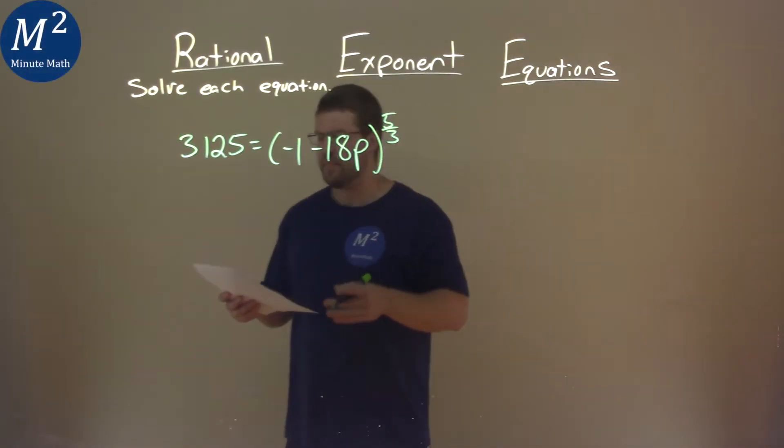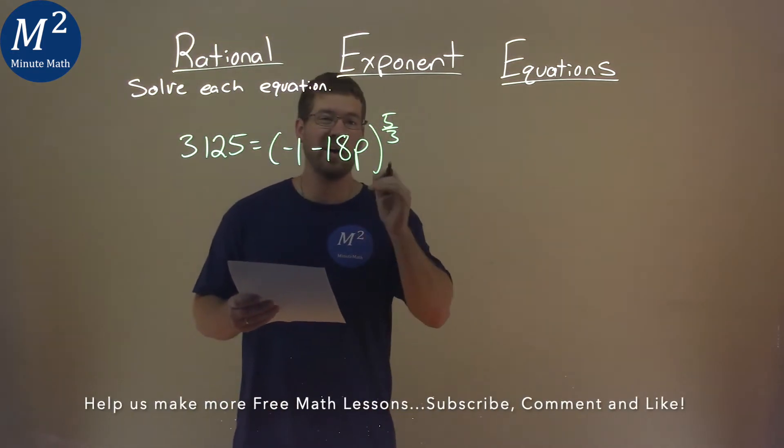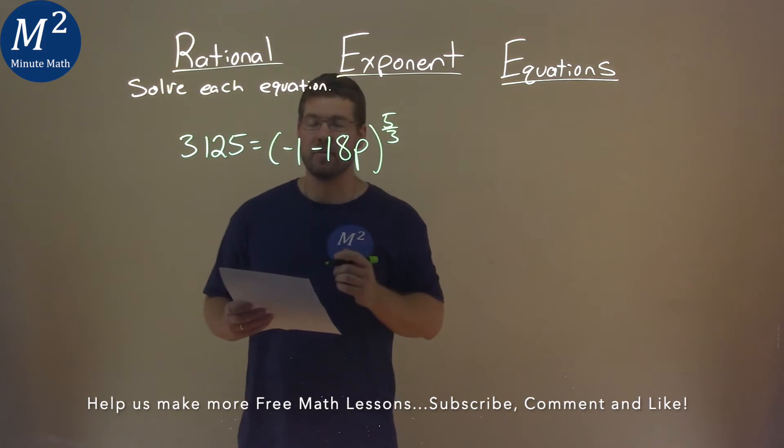We're given this problem right here, 3125 equals negative 1 minus 18p, all to the five-thirds power. I'm going to solve this equation.